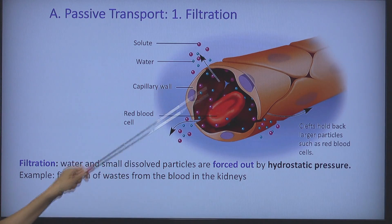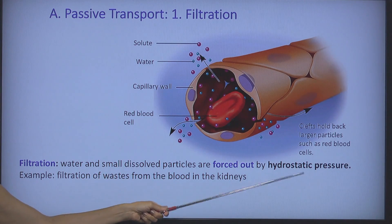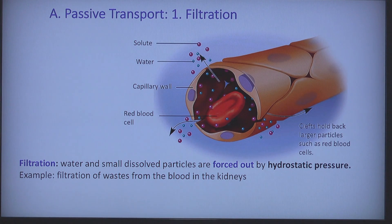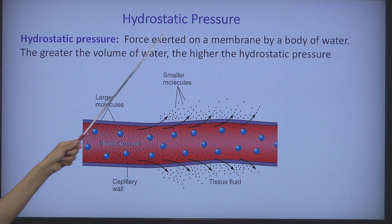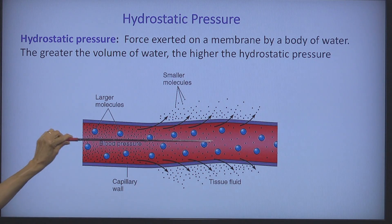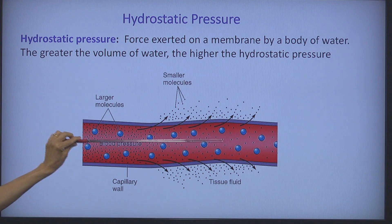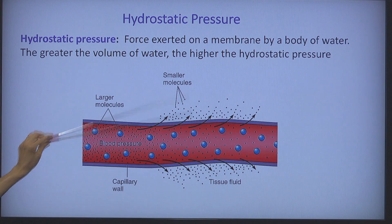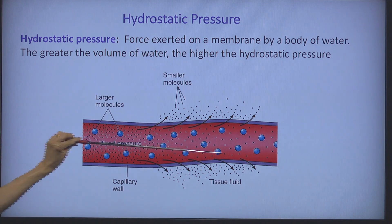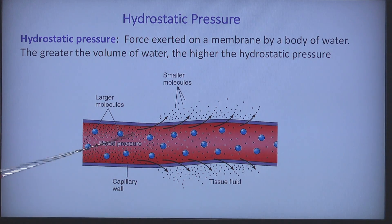The force that pushes the water and dissolved substances out is hydrostatic pressure. Hydrostatic pressure is the force exerted on the membrane due to the volume of water in that area. In a small capillary blood vessel, the water pressure present creates a force — the hydrostatic pressure — and it will push the fluid out. The plasma membrane is very thin and will always keep larger particles in.